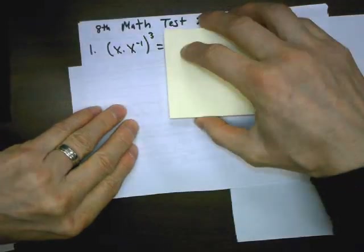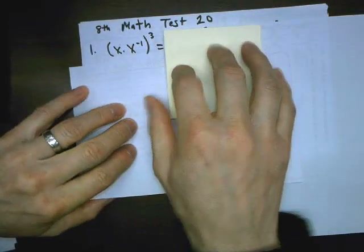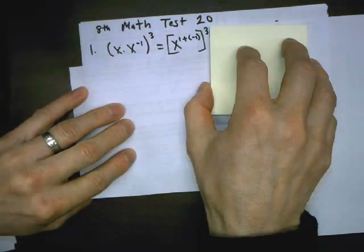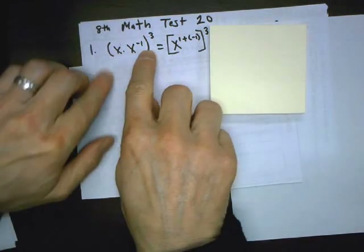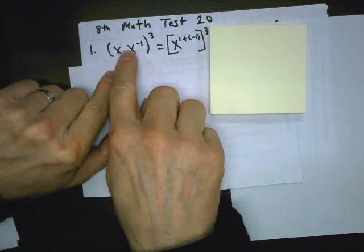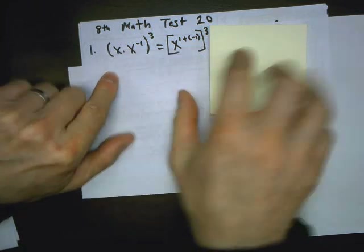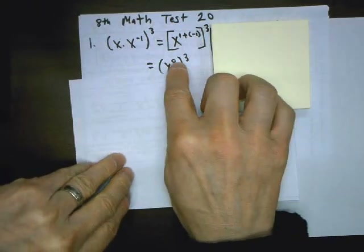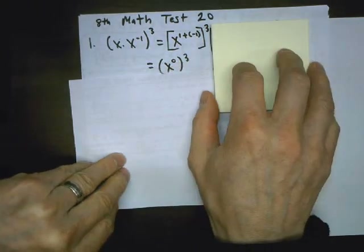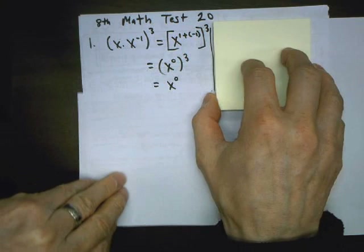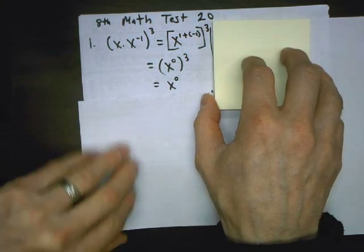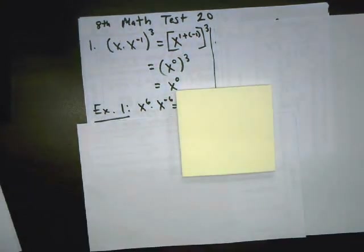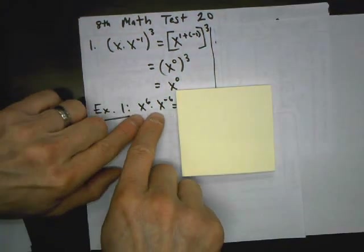We're going to simplify the expression they gave us first by going inside and multiplying powers at the same base, which means I'm going to add. There's a 1 there — 1 plus negative 1 is 0, and at this point, this is when we multiply the exponents. So 0 times 3 is 0. I look at my expressions — expression 1.